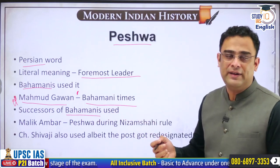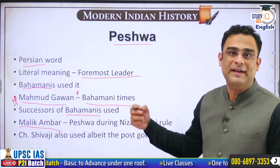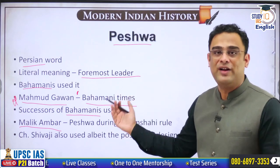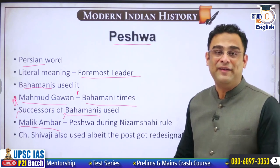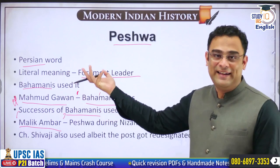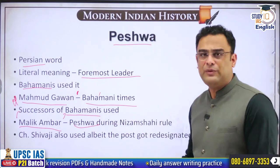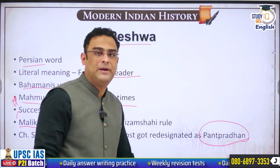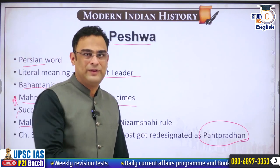Another famous name who held this designation was Malikambar — the famous Abyssinian slave boy who came to India and rose to the position of Peshwa, virtually controlling Nizam Shahi rule in the Deccan. It is one of the fascinating characters of medieval Indian history — how a young boy sold into slavery in Africa ended up becoming the most important authority in a medieval Indian state. Chhatrapati Shivaji Maharaj had also used this title briefly, and later replaced it with the term Panta Pradhan within his Ashta Pradhan Mandal of eight ministers.